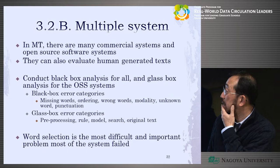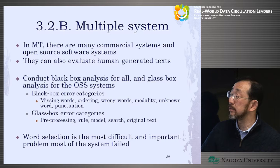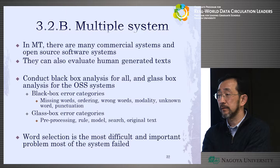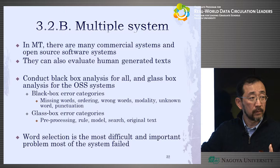Now, machine translation. There are many commercial systems including Google and others, as well as open source systems. You can also evaluate human-generated text — easily ask a human to translate a sentence. So there are many outputs for the same input, and you can do multiple-system analysis very easily, compared to information retrieval.